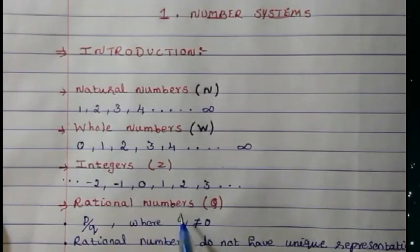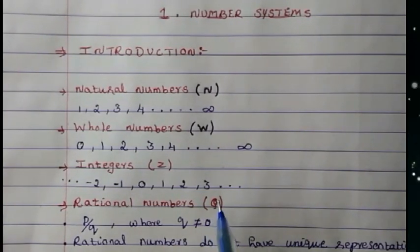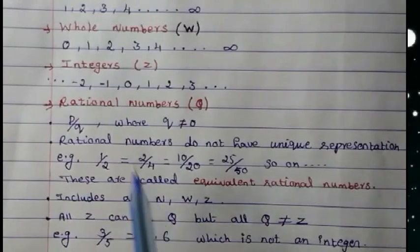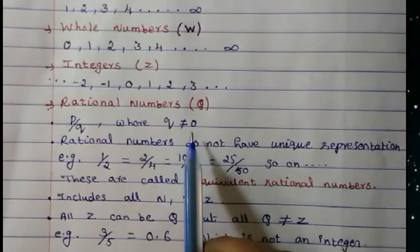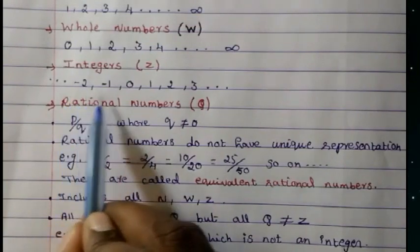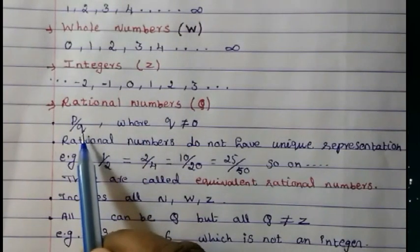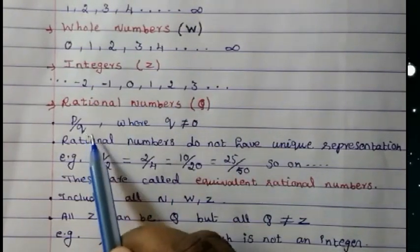Then comes rational numbers, which are also denoted by Q. What are rational numbers? Rational numbers are written in the form of P/Q where Q is not equal to 0. P can be any integer — it can be positive, it can be negative, or it can be 0. Q also can be any number but it should not be 0. So these numbers are called rational numbers.